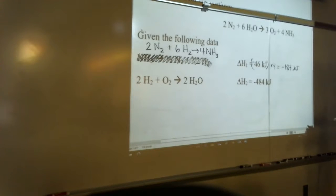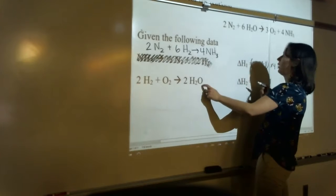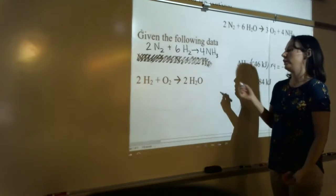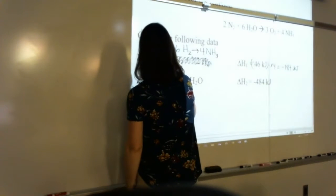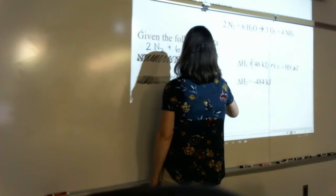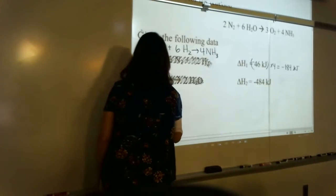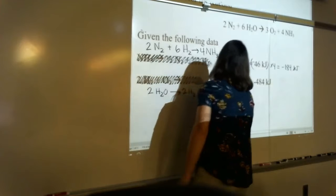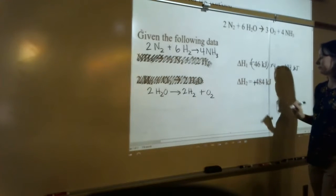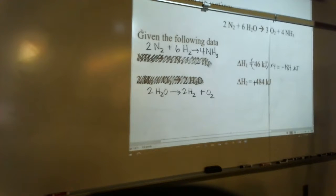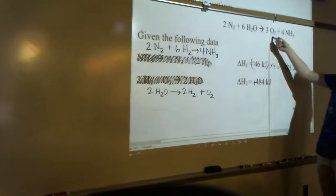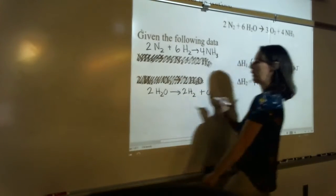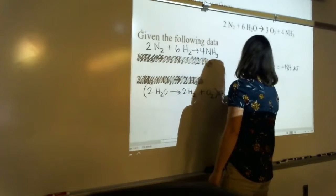For the second sub-step, we want H₂O as a reactant but it's currently a product, and O₂ as a product but it's currently a reactant. So we reverse it: 2H₂O → 2H₂ + O₂, and delta H changes from negative to positive. Then checking coefficients: we need 6H₂O and 3O₂, but have 2H₂O and 1O₂, so multiply the whole reaction by 3.